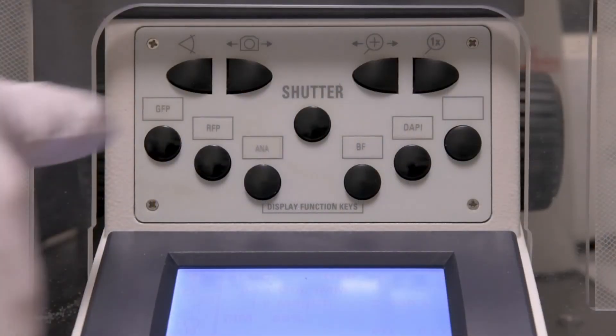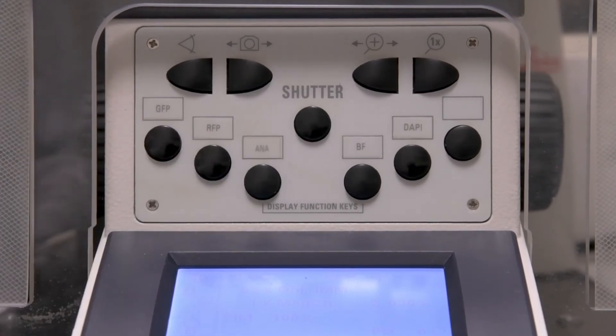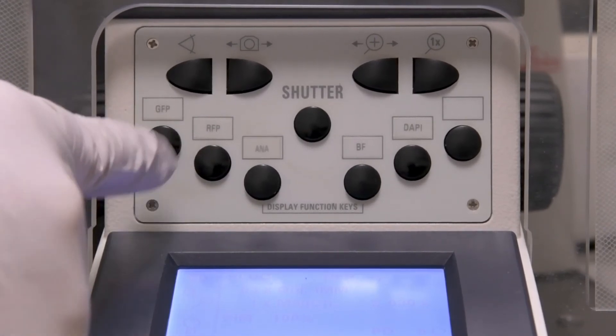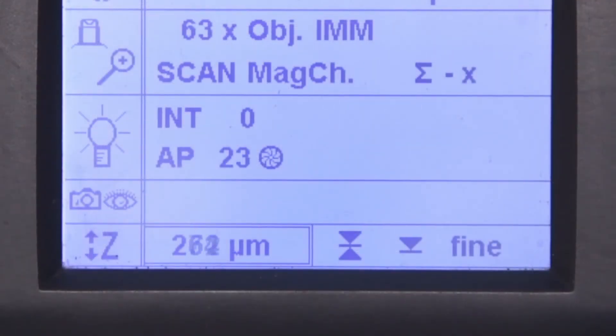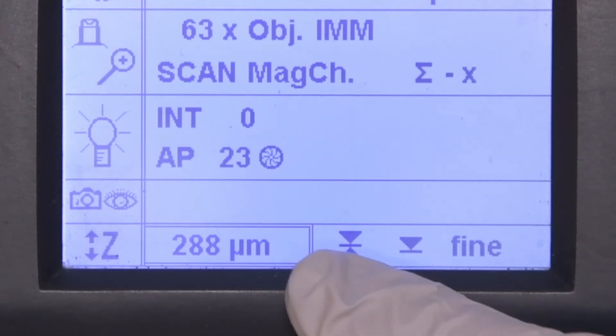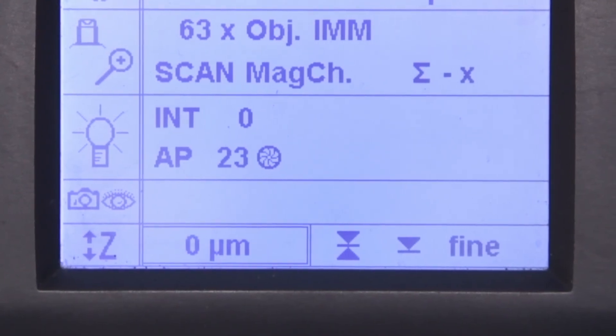After you have focused on the nuclei, you can push the other filter cube teeth to look in the other channels. Once you have something in focus, take a look at the Z position on the front panel. If it is more than 100 microns away in either plus or minus direction, something is wrong. Usually the slide isn't set in completely flat. You will have to lower the lens, check the slide, and then find your image again.